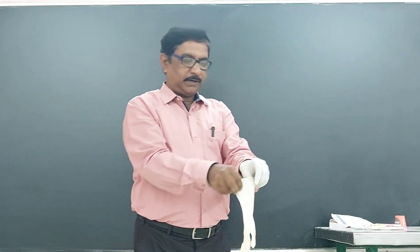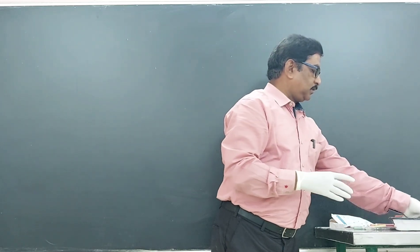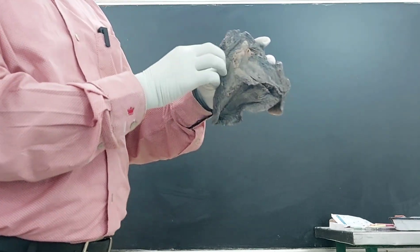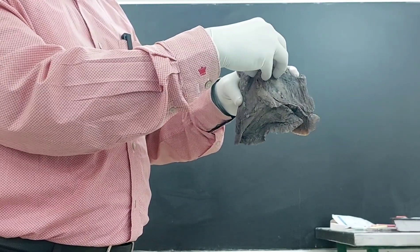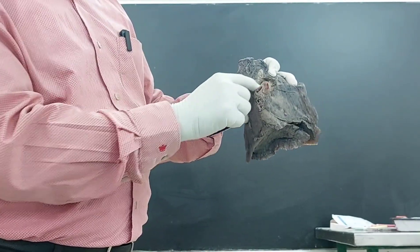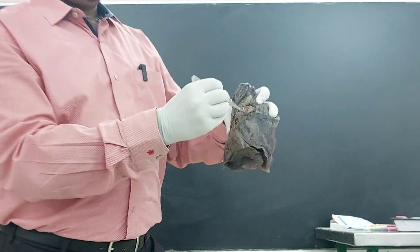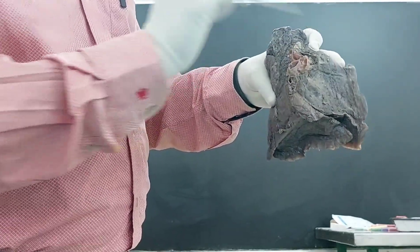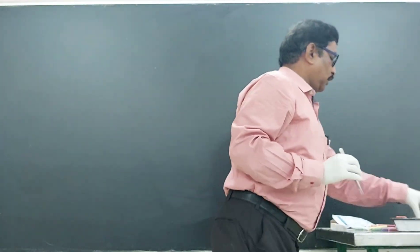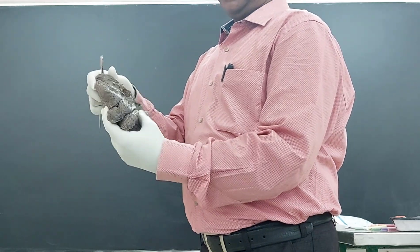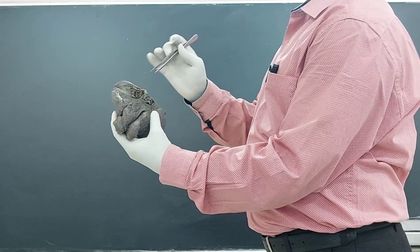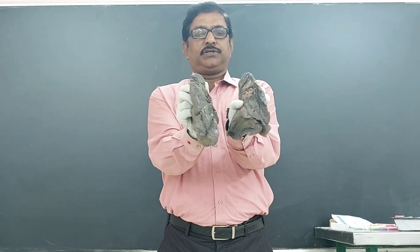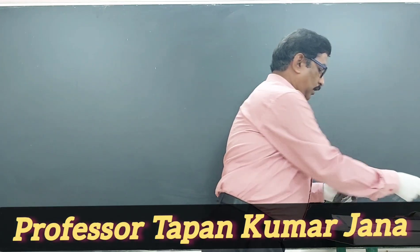This is the lung. The lung has three surfaces. On the medial surface you will find the hilum. Through the hilum, so many structures are passing — artery, vein, lymphatics, nerves, bronchus, and many more. This is the right side lung — also having a hilum. So on the medial surface of the right lung and the medial surface of the left lung, the hilum is present.